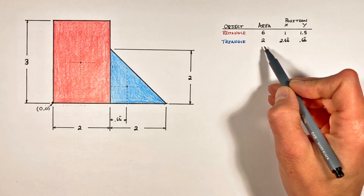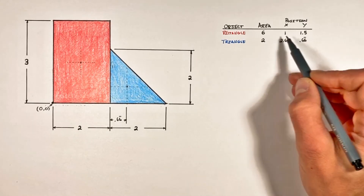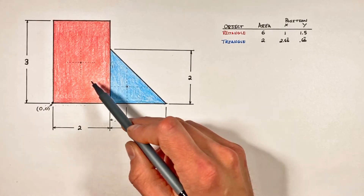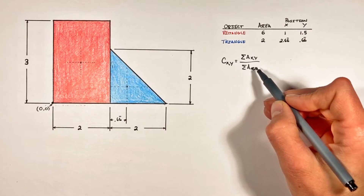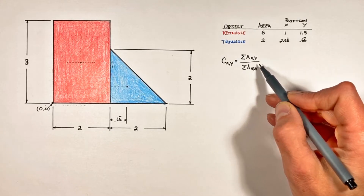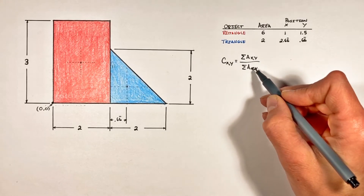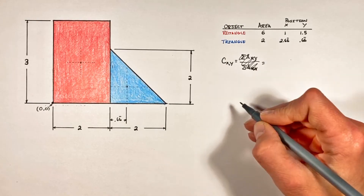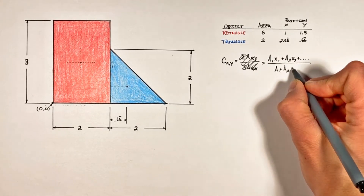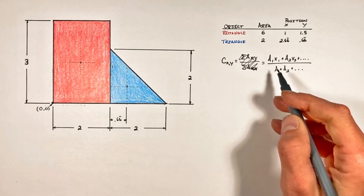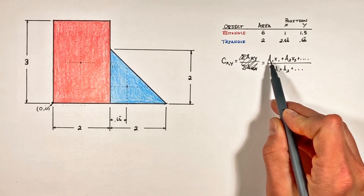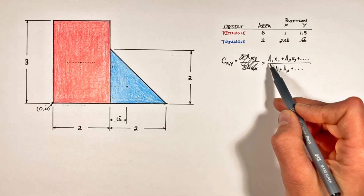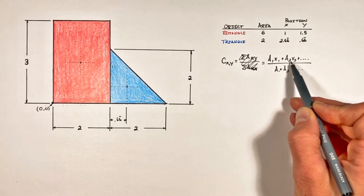Now that we've worked out the area, horizontal, and vertical positions of both objects, we can look at the equation for the center of area or centroid. Sometimes you'll see this equation written in a form that's not very useful, so I'm going to write it out differently. This equation gives us the center of area horizontally along the x-axis. If we put in the y-values for our objects, it gives us the centroid vertically. For center of mass, simply exchange the areas for masses.